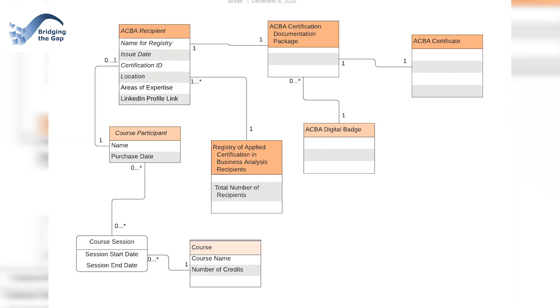Gliffy was my go-to tool for a long time for everything except wireframes. My go-to tool these days is Lucidchart. I pay less than $100 a year for an online subscription. I've used it to create swim lane diagrams for marketing processes and an entity relationship diagram for our ACBA registration information model, which I'm going to show you on screen now. We also have a free sample that you can download by clicking the card on the top right corner of this video.